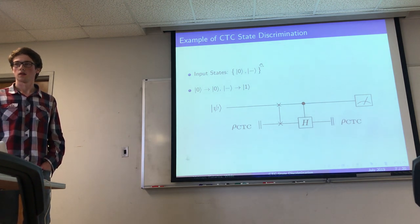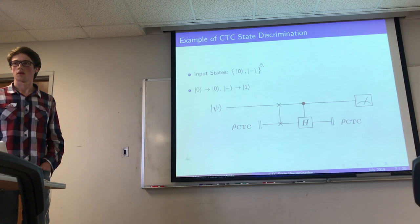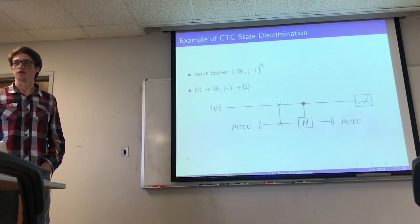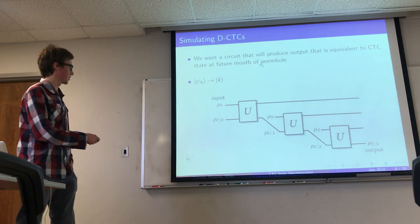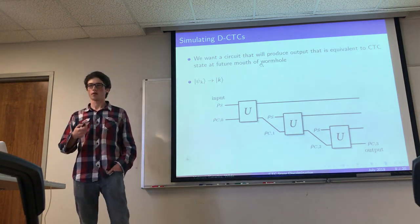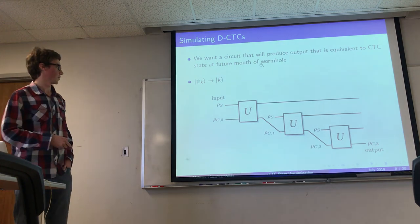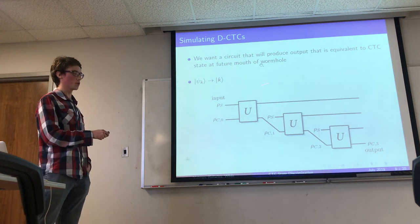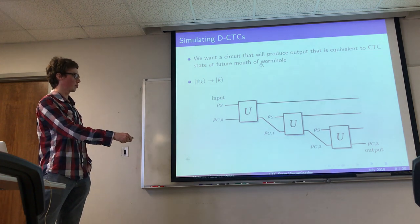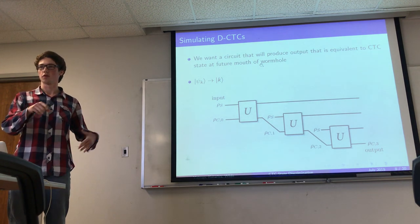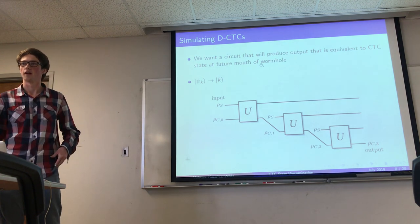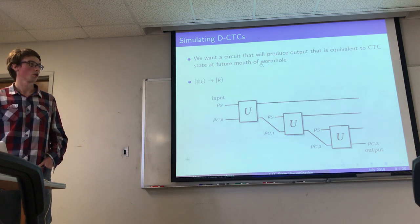Intuitively, the first time through the circuit the CTC state wasn't in that eigenvector state — it was in some other state — but going through the time loop many times it got closer and closer. In the simulation, the initial CTC state has nothing to do with the CTC state from a true CTC; it's simply that applying the recipe — the unitary interaction — enough times, the final output converges to what would be the CTC state from a true CTC interaction using that same unitary, according to Deutsch's model.